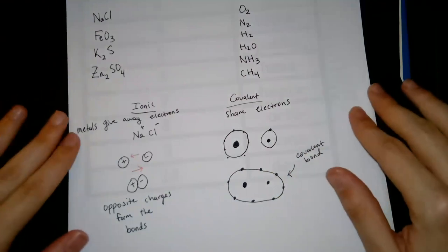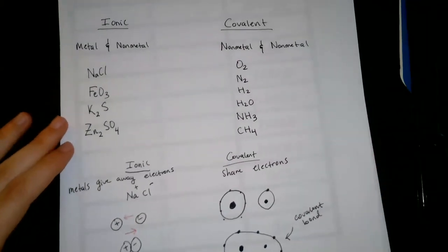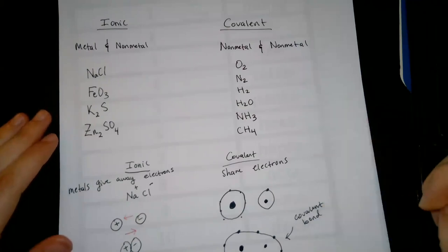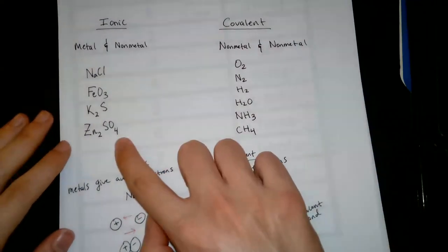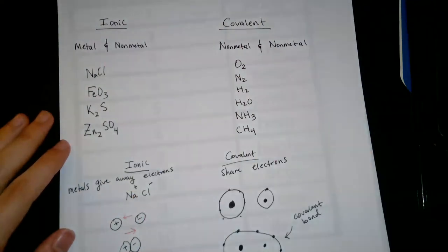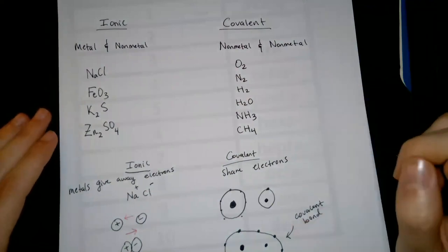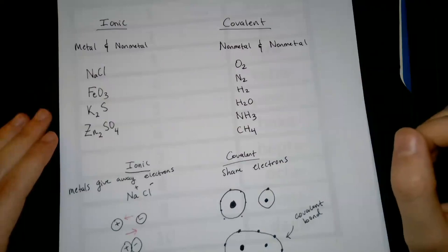And so this is just kind of an introduction to ionic and covalent molecules, compounds. And so we'll look at how to name these compounds. So if you look at something like this, you can say, okay, that's zinc sulfate or sulfide. And so in the next video, that's what we'll be doing. We'll be naming these compounds. And so in order to do that, you have to be able to distinguish whether something is ionic or covalent.